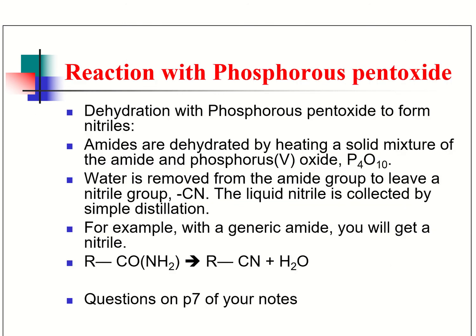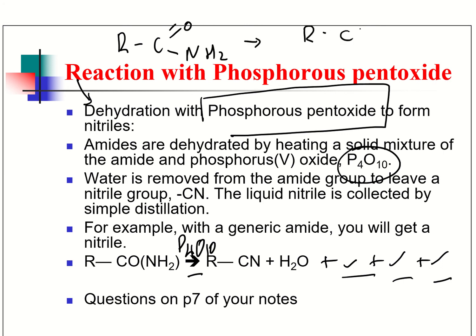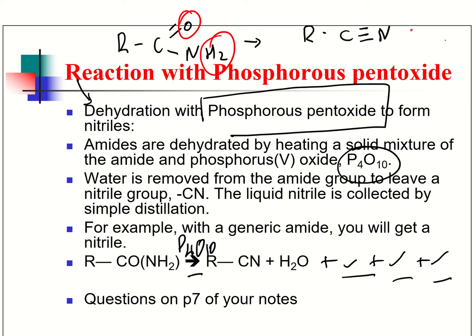The next step is to convert amides into nitriles. This is a dehydration reaction, and what we use is phosphorus pentoxide, formula P₄O₁₀. We don't put phosphorus pentoxide into the equation because a whole load of other products are also produced which we don't need to concern ourselves with. We put P₄O₁₀ on the arrow. The amide goes to R-CN, a nitrile. You can see that oxygen and hydrogen have been removed — water has been produced — so it is indeed a dehydration reaction.